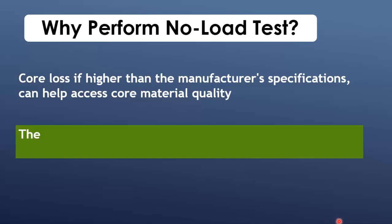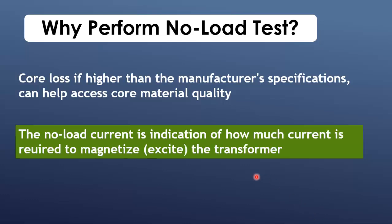Another purpose is by measuring the excitation current flowing into the primary side during no-load operation, one can understand the current required to maintain the magnetic flux in the transformer. This helps in analyzing the magnetic properties of the core.